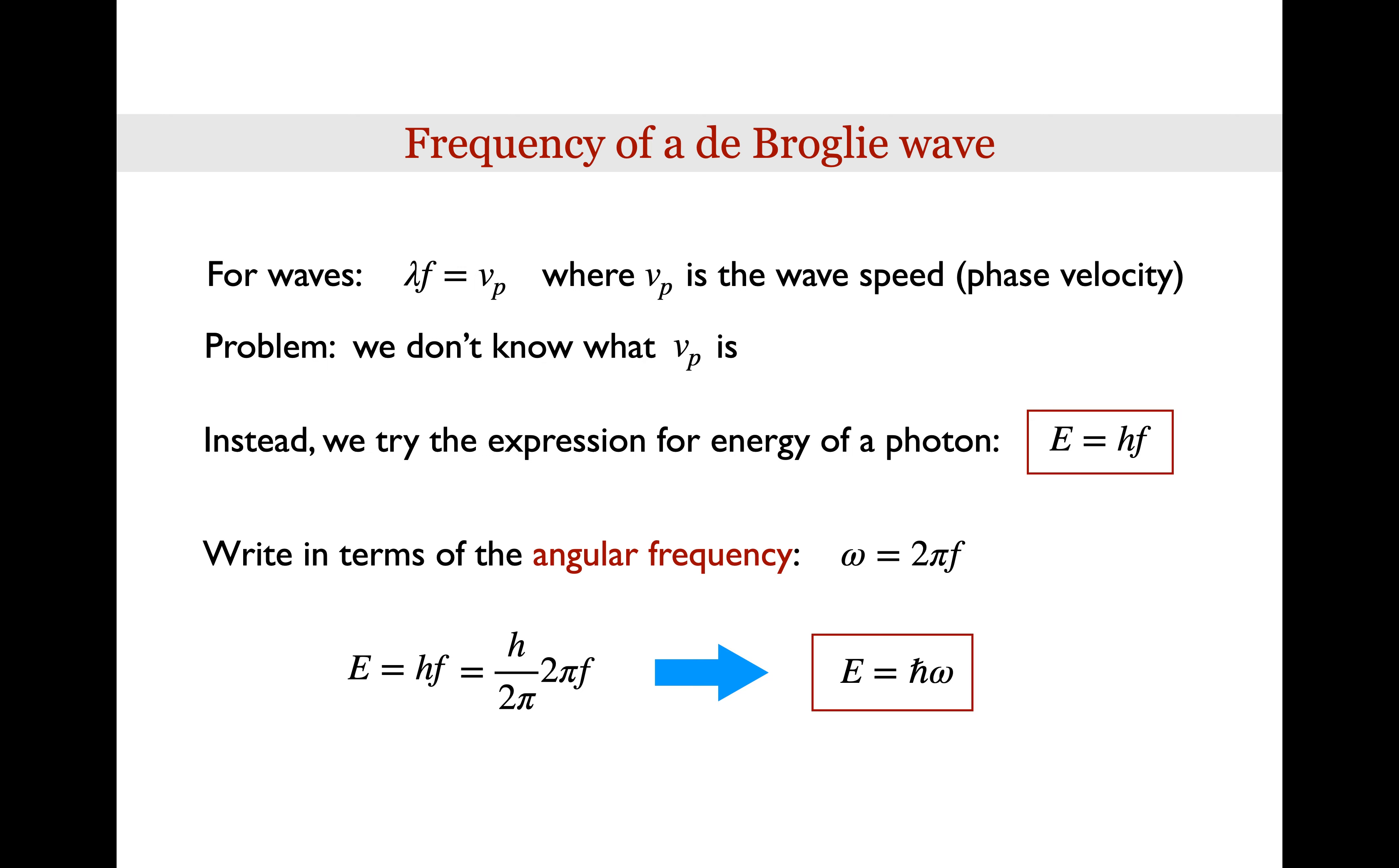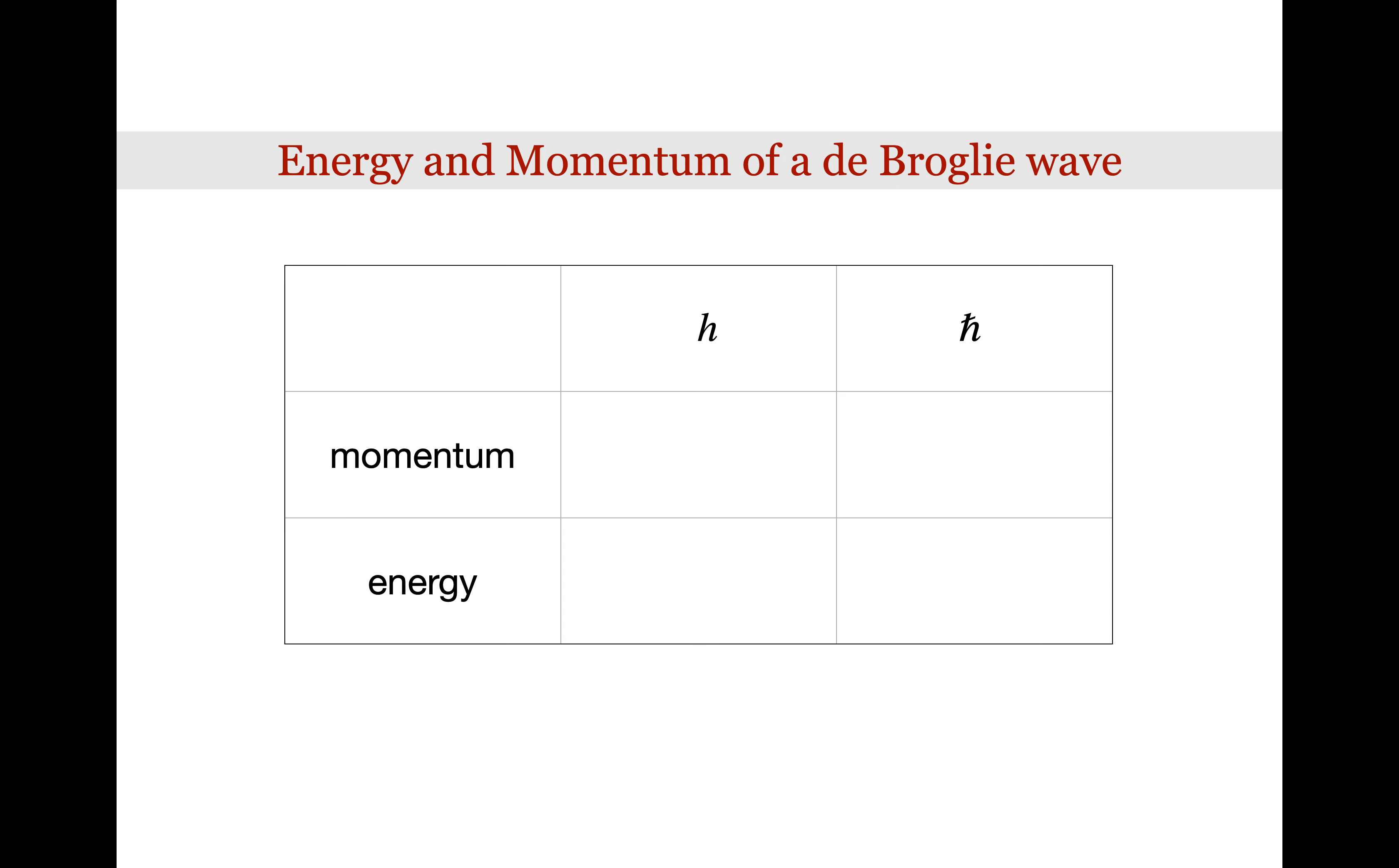We haven't proved these results or derived them from fundamental principles. We've just made some assumptions. That's what de Broglie did, and he won the Nobel Prize for it. So let's organize our results in a table. The columns of the table will be expressions that contain h and h bar, and the rows will be expressions for the momentum and energy.